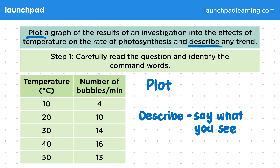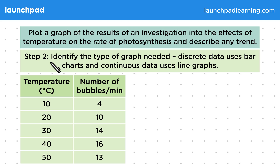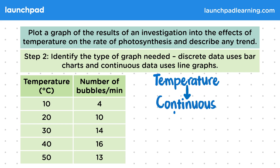Step two: identify the type of graph needed. Discrete data uses bar charts and continuous data uses line graphs. To determine the type of graph needed, we look at the independent variable — the variable that was changed in the investigation. In this case it's temperature, and that's continuous data, which means we're going to plot a line graph.